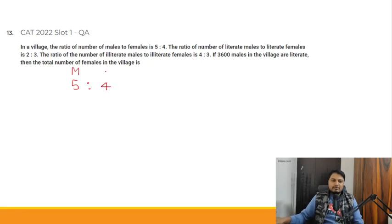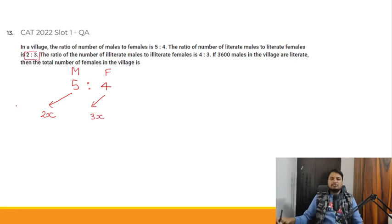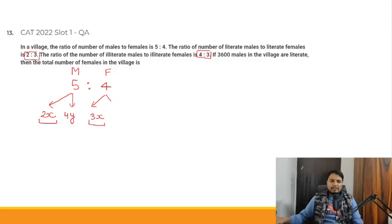It is given that literate males to literate females ratio is 2:3. So if literate males = 2x, then literate females = 3x. Further, illiterate males to illiterate females ratio is 4:3. So if illiterate males = 4y, then illiterate females = 3y.